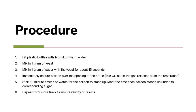For my procedure, I filled little plastic water bottles with 170 milliliters of warm water. I mixed in one gram of yeast with that warm water, then added one gram of sugar and mixed for about 15 seconds. I then immediately secured a balloon over the opening of the bottle to catch the gas released from respiration — that was how I measured how quickly cellular respiration was happening. I started a 10-minute timer and watched for the balloon to stand up, marking each time under its corresponding sugar, and repeated for two more trials to ensure validity.